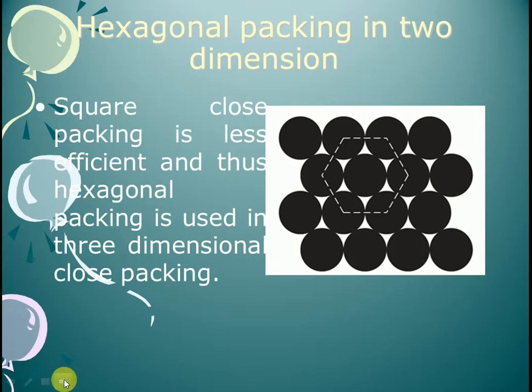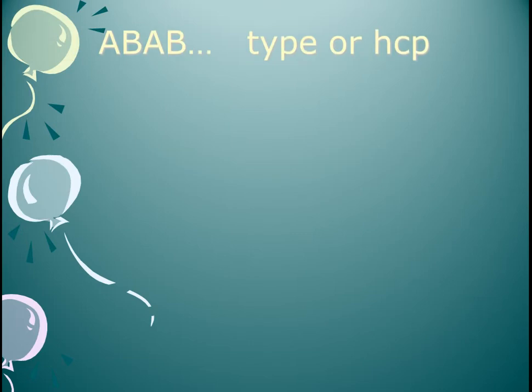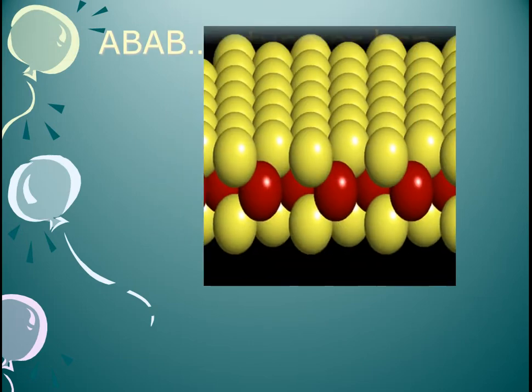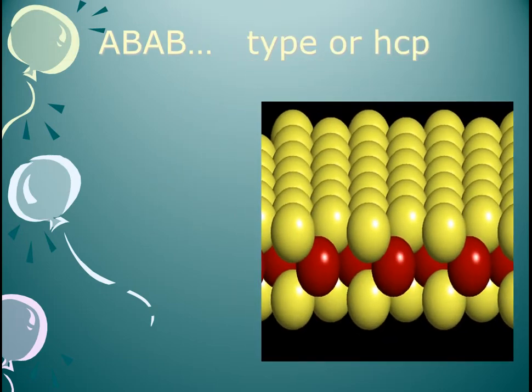Square closed packing is less efficient than hexagonal packing. Hexagonal packing is used in three dimensional closed packing. Now we will see the types: AB type and ABC type, and the HCP type. Here is a hexagonal closed packing structure.